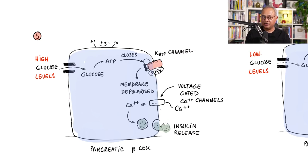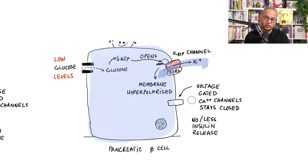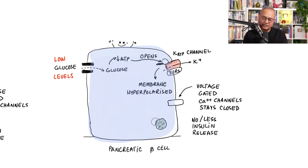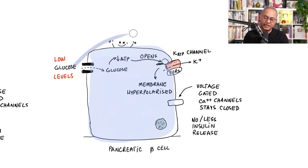When glucose levels are low, there is less glucose entering the beta cell, less ATP produced, and K-ATP channels cannot stay closed — they open. Potassium leaks outward, making the membrane hyperpolarized — more negative than normal. Voltage-gated calcium channels cannot open, calcium does not come in, and insulin is not released. This is exactly what we want: when glucose is low, no insulin is produced.